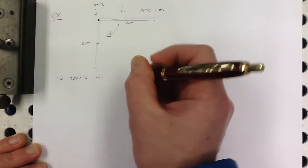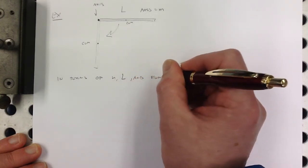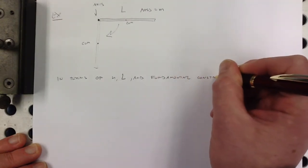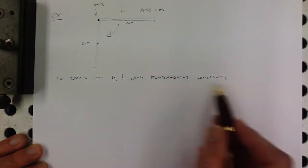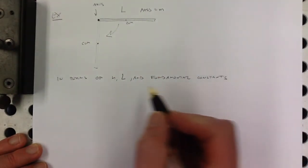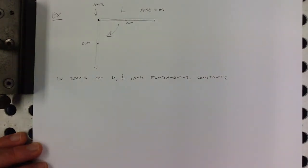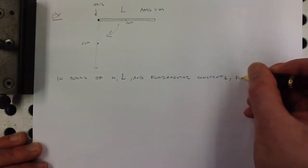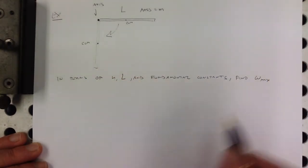So, in terms of m, L, and any fundamental constants, in this case the fundamental constant would be g, the acceleration due to gravity. In terms of m, L, and fundamental constants, we want to find the maximum angular velocity. And the maximum angular velocity is going to happen at the very bottom here.